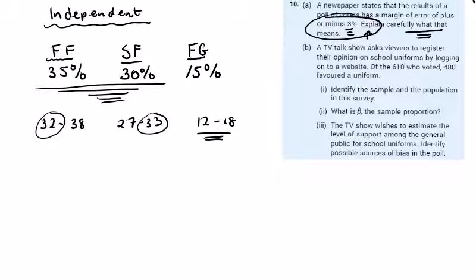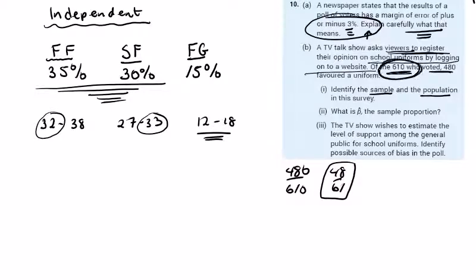TV talk show asked viewers to register their opinion on school uniforms by logging onto a website. Of the 610 who did, 480 favor the uniform. 480 out of 610, 48 over 61 favor the uniform. Identify the sample and the population. The population is the viewers of the talk show, they're the people watching. The sample is the 610 who responded. What is p hat, the sample proportion? Well we've got that down here already, that's p hat, the sample proportion we've been using p all along.